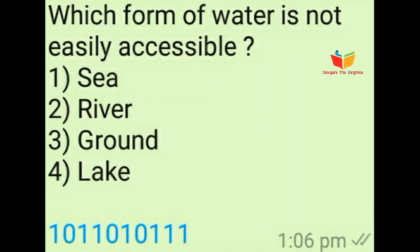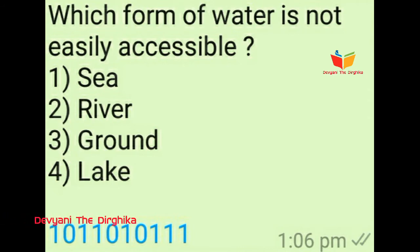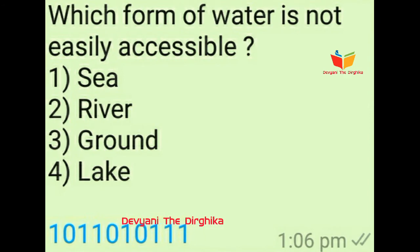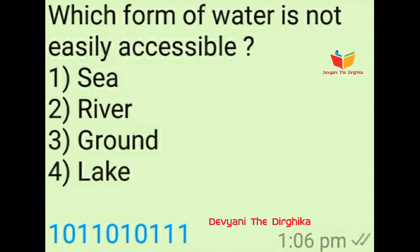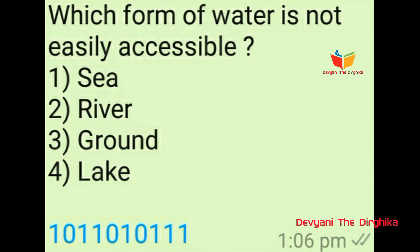Question number seven: Which form of water is not easily accessible? Option number one is sea, option number two is river, option number three is ground, and option number four is lake. The answer is option number three, means ground.